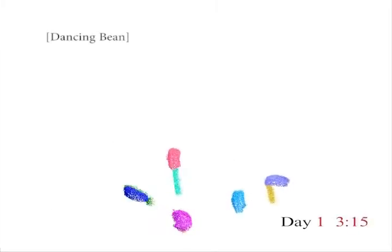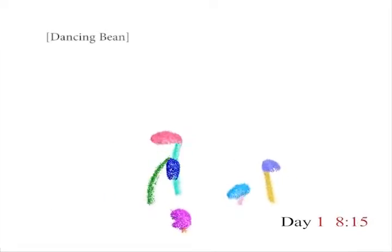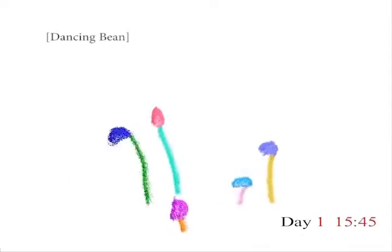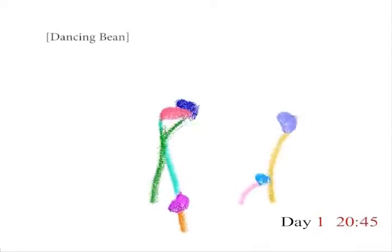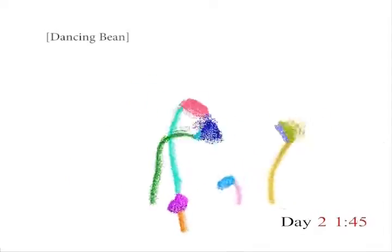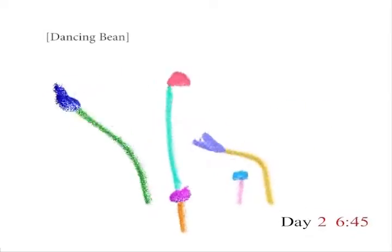Here we show a dancing bean and the event detection. Due to the delicate stem structure of the plant, it demonstrates significant body movement during its growth. Yet our method is still able to track and detect the critical event movements.